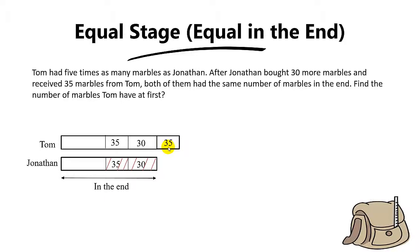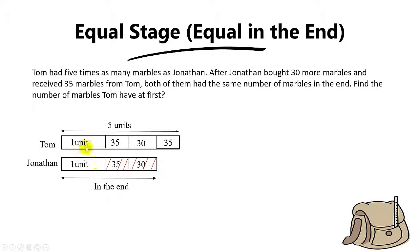Now, the question says Tom had five times as many marbles as Jonathan. This will be the model at the start — from here to here will be five units, and this part over here will be one unit. So from the model, if here is five units and here is one unit, from here to here will be four units.